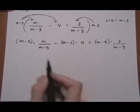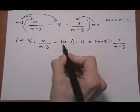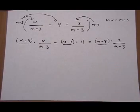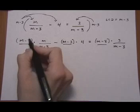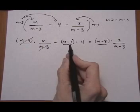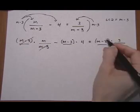All right, so each term gets the denominator one time. m minus 3 cancels top and bottom. m minus 3 stays here. No canceling. It cancels here.